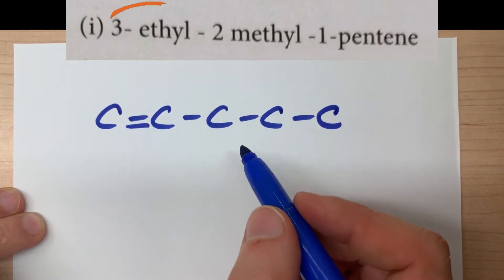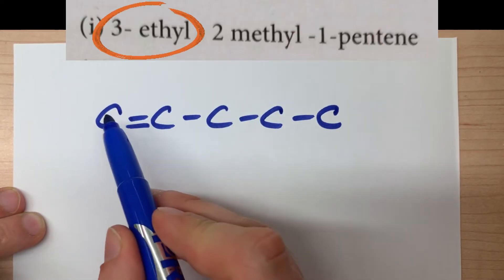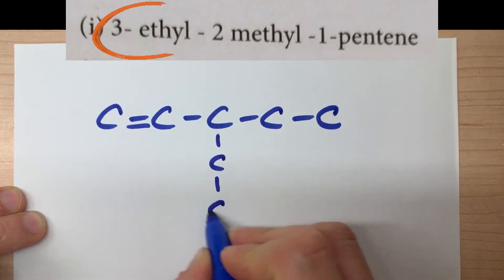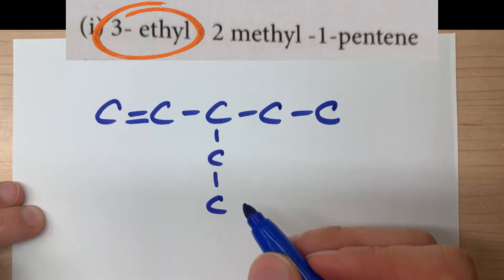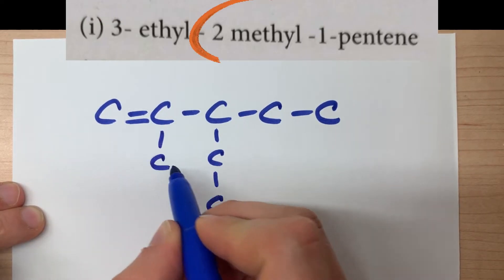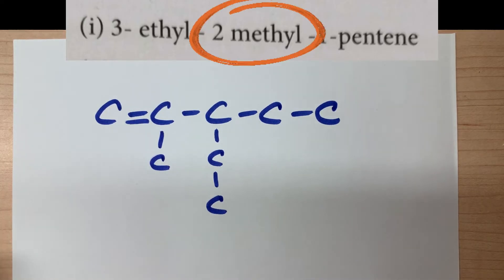Now we also have an ethyl group hanging off of carbon three. If this is carbon one, two, three, then this is the carbon we need to have the two carbon chain or ethyl group hanging off of. Then we have a methyl group hanging off of carbon number two. There we go, a one carbon chain hanging off of that.